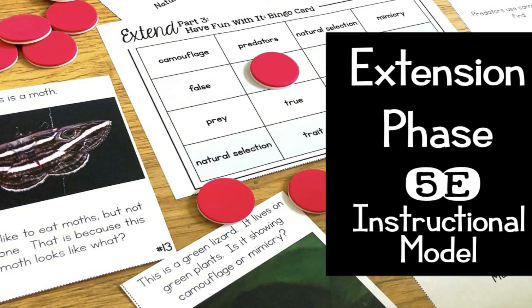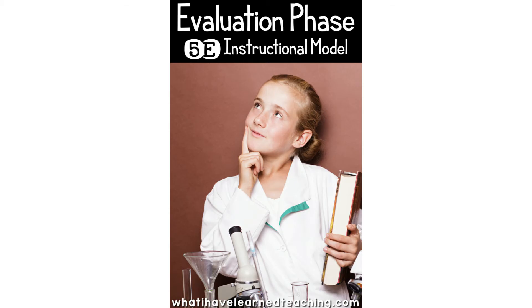Elaborate: The elaboration phase of the 5E model focuses on giving students space to apply what they've learned, helping them develop a deeper understanding. Teachers may ask students to create presentations or conduct additional investigations to reinforce new skills. This phase allows students to cement their knowledge before evaluation. Evaluate: The 5E model allows for both formal and informal assessment. During this phase, teachers can observe their students and see whether they have a complete grasp of the core concepts. It is also helpful to note whether students approach problems in a different way based on what they learned.